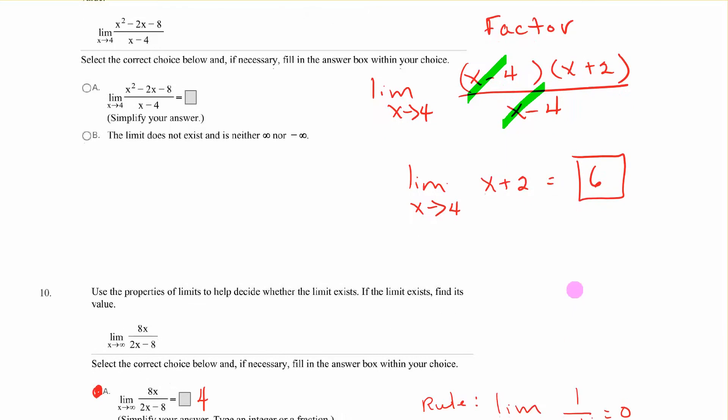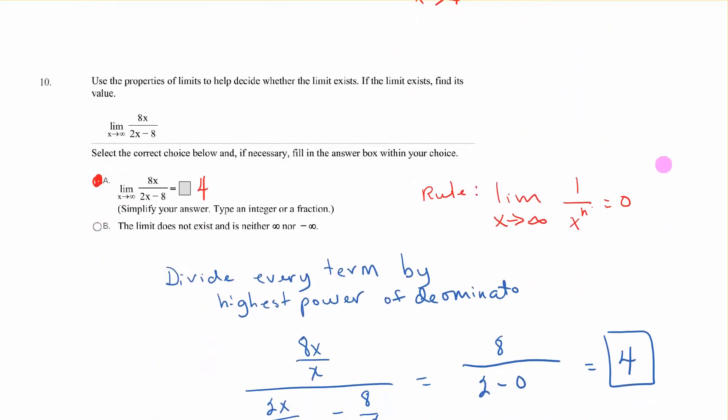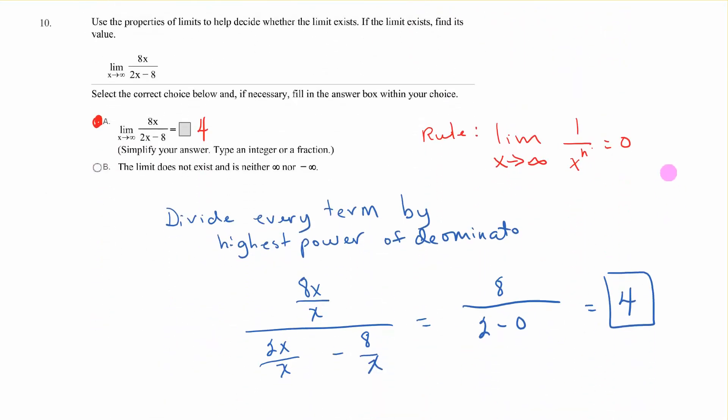Number 10. Remember, this is approaching infinity. So here's our rule. Divide every term by the highest power of the denominator. And so we have 8x over x, 2x over x minus 8 over x. Those canceled out, we're left with 8. Those cancel out, we're left with 2 minus 0 over here. So 8 over 2 is 4.